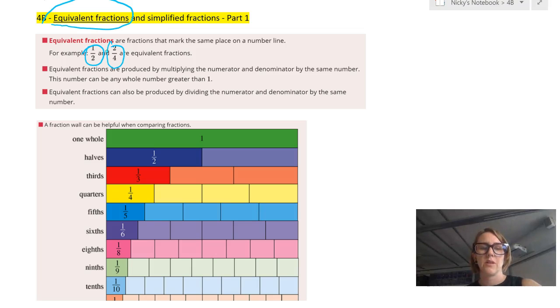Equivalent fractions can also be produced by dividing the numerator and the denominator by the same number, if you can. So that's not as easy to do, because sometimes a number won't divide completely into another, in which case you can't use that number.